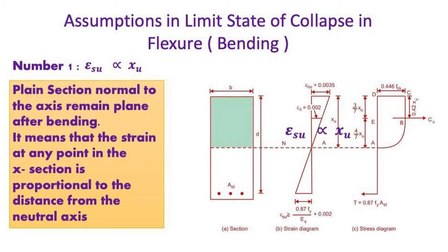Number 1 assumption: Plain section normal to the axis remain plane after bending. It means that the strain at any point in the cross section is proportional to the distance from the neutral axis.